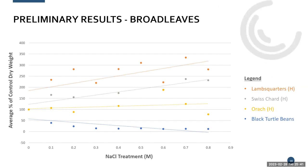Looking at the broad-leaved species — lamb's quarters, Swiss chard, and orach — all halophytes — against black turtle beans: black turtle beans decreased in biomass as soon as any salt was introduced, confirming susceptibility. Swiss chard and orach did pretty well, either staying about the same or actually increasing in biomass slightly with increasing salinity. But the best performer was common lamb's quarters, which showed no decrease in biomass at all despite increasing salinity. While not a statistically significant linear relationship, there was a biological significance, which is why we'll continue working with lamb's quarters going forward.